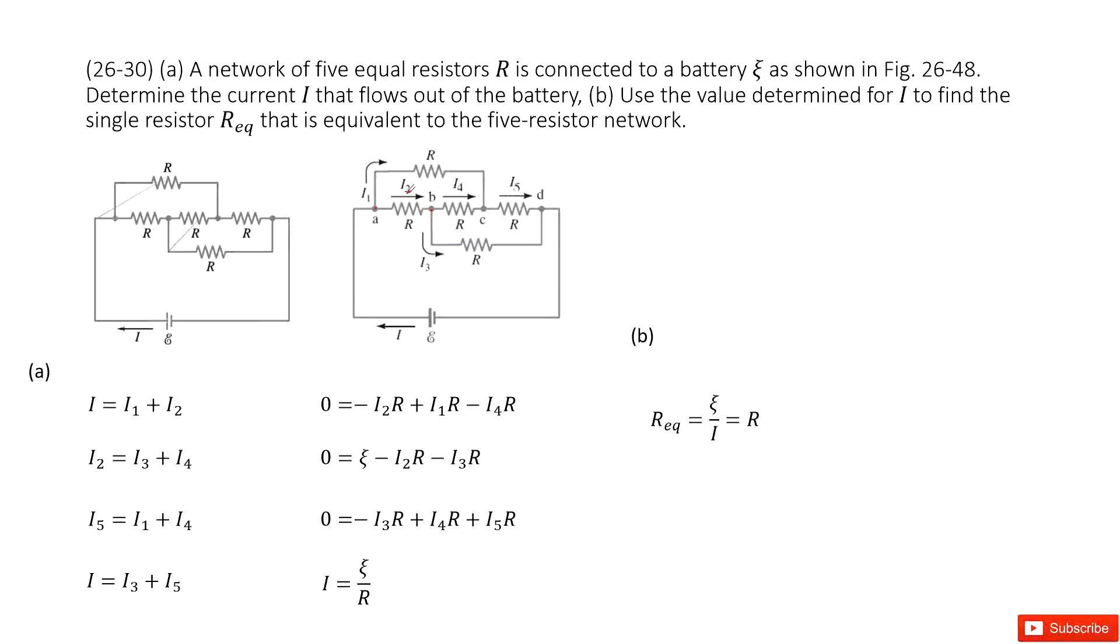And then look at point B. So I2 equals I3 plus I4. Then point C, we can see we have I1 plus I4 equal to I5. And look at point D. That is I5 plus I3 equal to I.